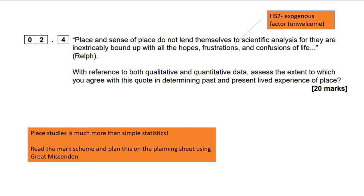The question is: 'Place and sense of place do not lend themselves to scientific analysis, for they are inextricably bound up with the hopes, frustrations and confusions of life.' With reference to both qualitative and quantitative data, assess the extent to which you agree with this quote in determining past and present lived experience of the place. Basically, can we rely on qualitative and quantitative data to determine this lived experience? The mark scheme is there for you.